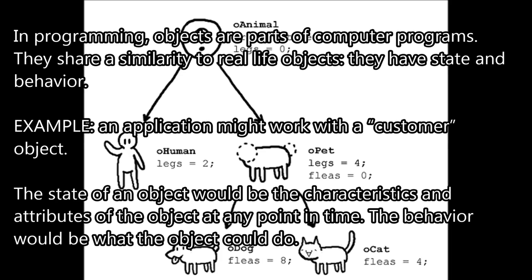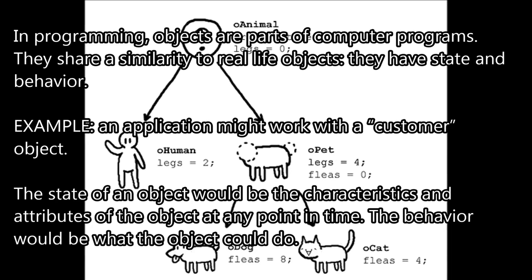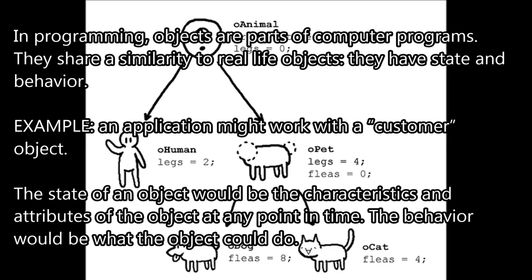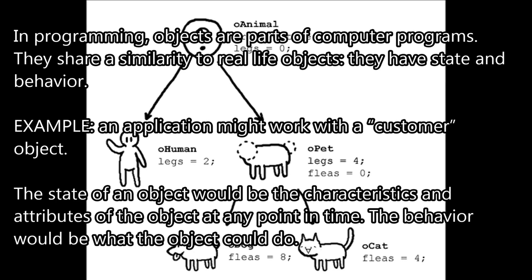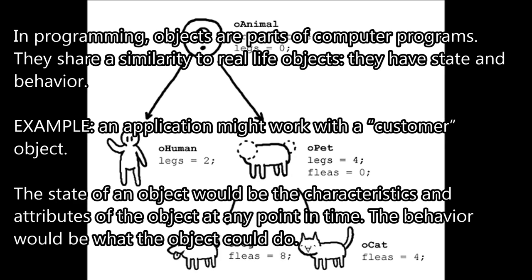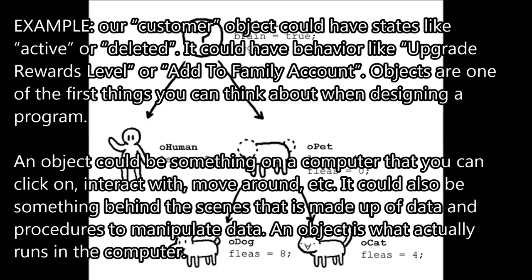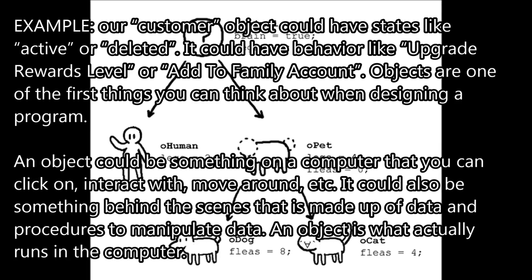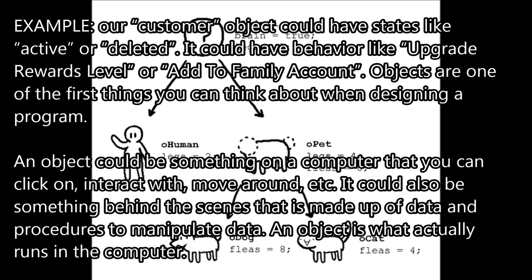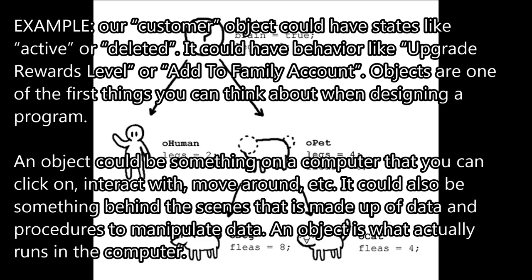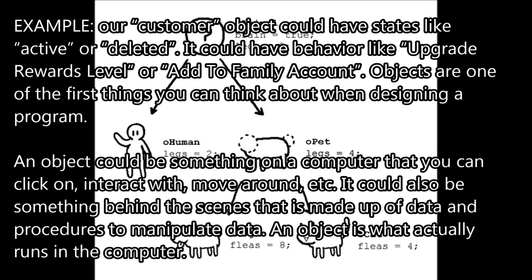In programming, objects are part of computer programs and share a similarity to real-life objects — they have state and behavior. For example, an application might work with a customer object. The state would be the characteristics and attributes of the object at any point in time; the behavior would be what the object could do — such as 'upgrade rewards level' or 'add to family account.' An object could be something you can click on and interact with on screen, or something behind the scenes made up of data and procedures to manipulate data.